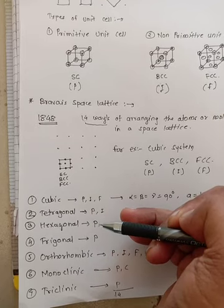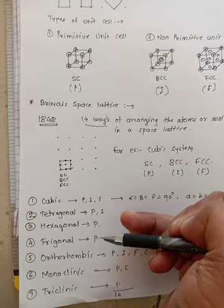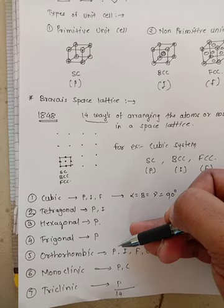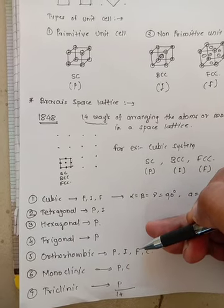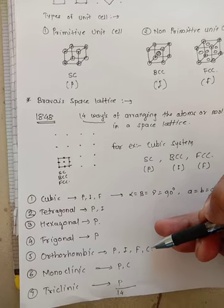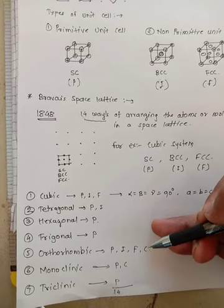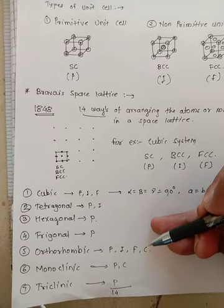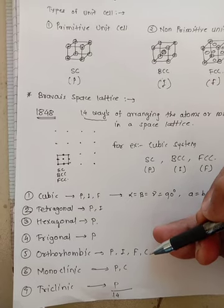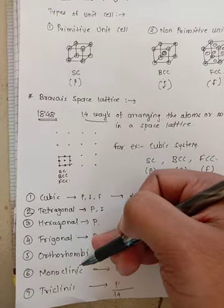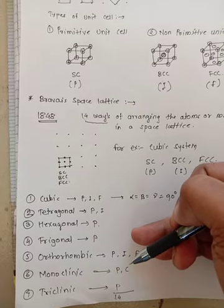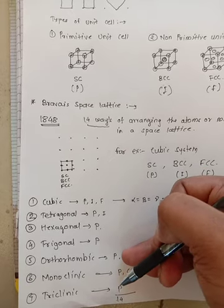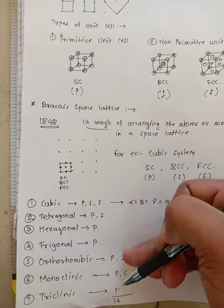Hexagonal has one sub-lattice: simple hexagonal. Trigonal has one sub-lattice: simple trigonal. Orthorhombic system has four sub-lattices — P, I, F, C — that is simple orthorhombic, body-centered orthorhombic, face-centered orthorhombic, and base-centered orthorhombic, where atoms are present at the corners and two atoms are present at the upper and lower faces. Monoclinic has two sub-lattices: simple monoclinic and base-centered monoclinic. Triclinic has only one sub-lattice: simple triclinic.